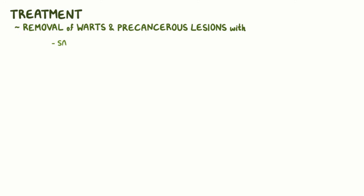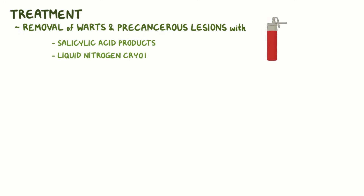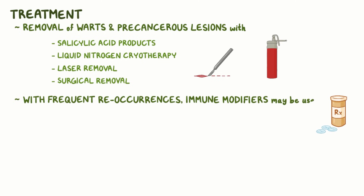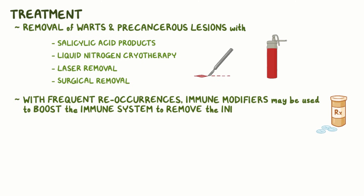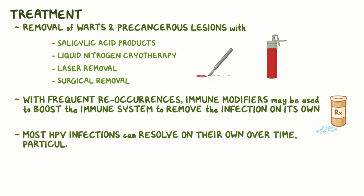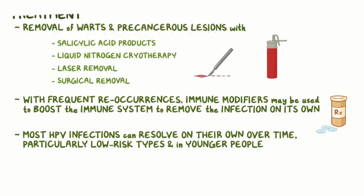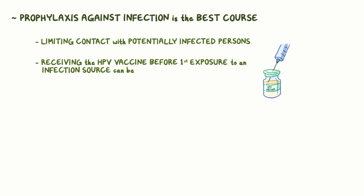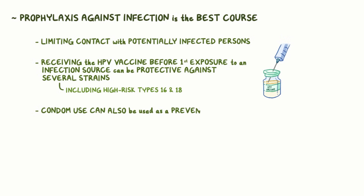Treatments often center around removal of warts and precancerous lesions with salicylic acid products, liquid nitrogen cryotherapy, or laser or surgical removal. In cases of frequent reoccurrences, immune modifiers may be used to help boost the immune system to remove the infection on its own. Most HPV infections can resolve on their own over time, particularly with low-risk types and in younger people. But really, prophylaxis against infection is the best course — limiting contact with potentially infected persons or receiving the HPV vaccine before first exposure, which can be protective against several strains, including high-risk types 16 and 18. Condom use should also be considered a measure of prevention.